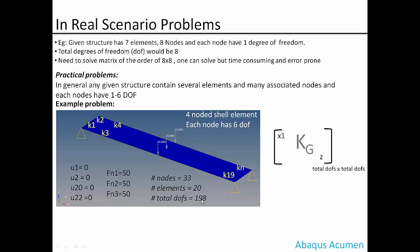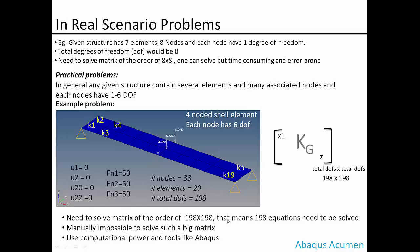When we have this global stiffness matrix for each of these elements like K1, K2, K3 up to KN, say K20, and once we combine K1, K2, K3, all these each element stiffness matrices to build a global stiffness matrix, the order of that global stiffness matrix will be 198 by 198. This means we need to solve 198 equations manually, but is it possible to do manually? Because bigger the matrix size, it will be difficult for us to solve manually. So here we can use computational power and tools like Abaqus to help us solve this problem at one go in a fraction of seconds.